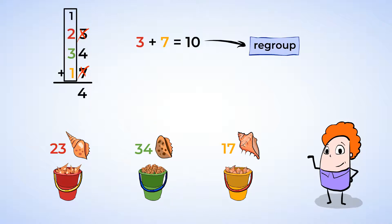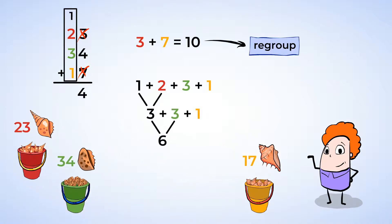Lastly, let's add the tens. 1 plus 2 is 3, 3 plus 3 is 6, and another 1 is 7. That means we have 7 tens. You can write that in the tens place.